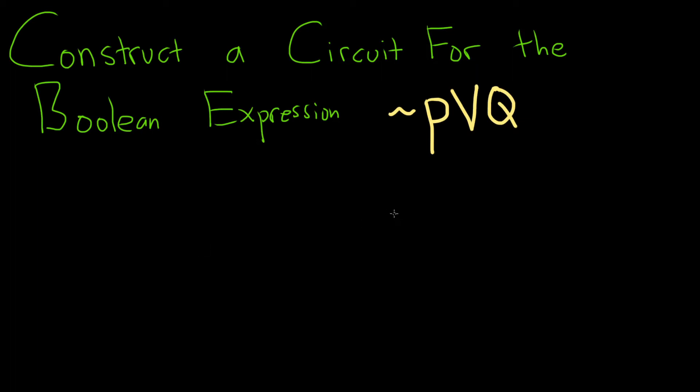In this problem, we're going to construct a circuit for the Boolean expression not P or Q. So the way to do this is to start with the outermost operation. In this case, that would be the OR.